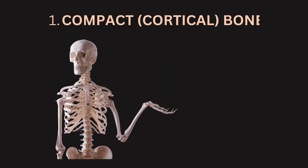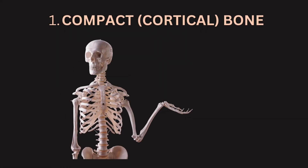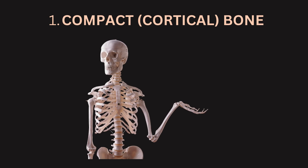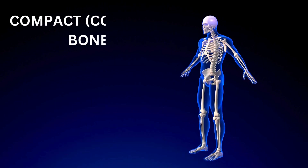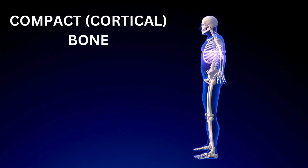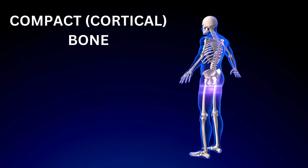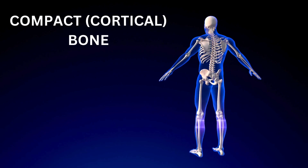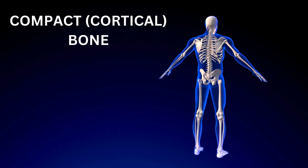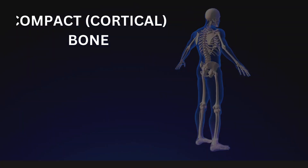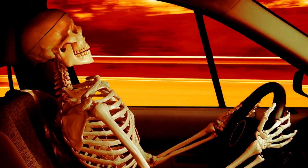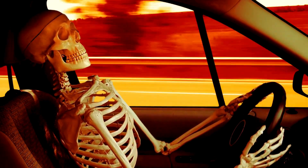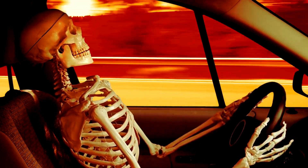1. Compact (cortical) bone. Location: compact bone is dense and forms the outer layer of most bones. It is particularly prominent in the shafts of long bones and the outer surfaces of all bones.